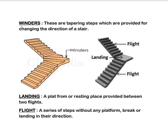The next component part is winders. These are tapering steps which are provided for changing the direction of a stair. The next component part is landing. Landing is a platform or resting place provided between two flights, which is generally used to change the direction of a stair.